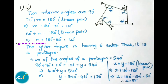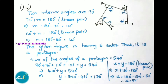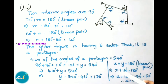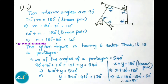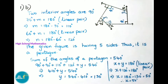Since X and Y form a linear pair, X plus Y equals 180 degrees. Substituting Y equals 130: X plus 130 equals 180, so X equals 180 minus 130, that is 50 degrees. Therefore X value is 50 degrees.